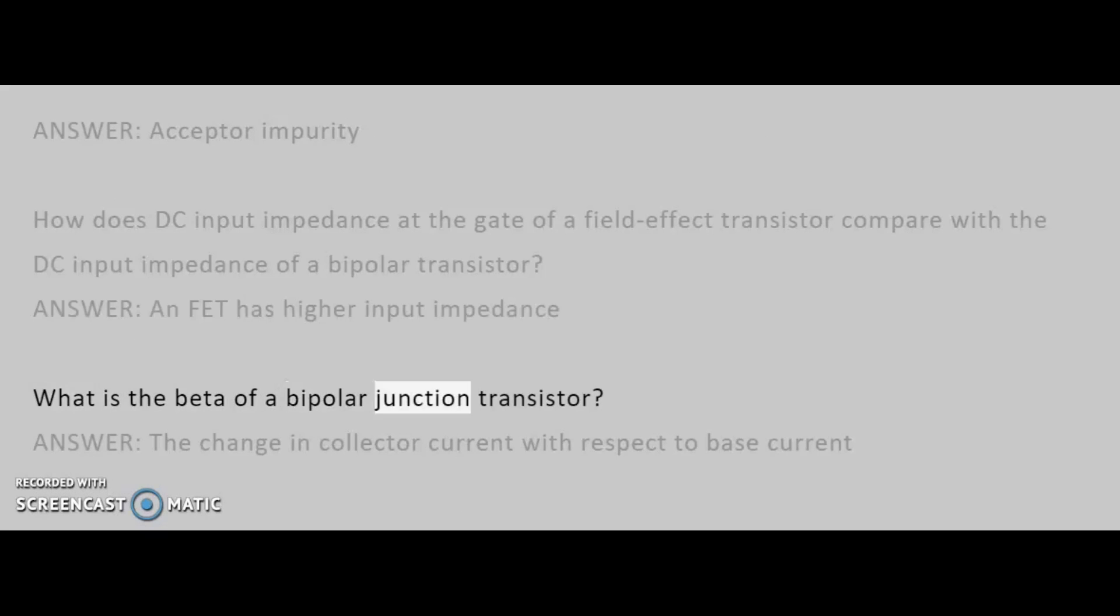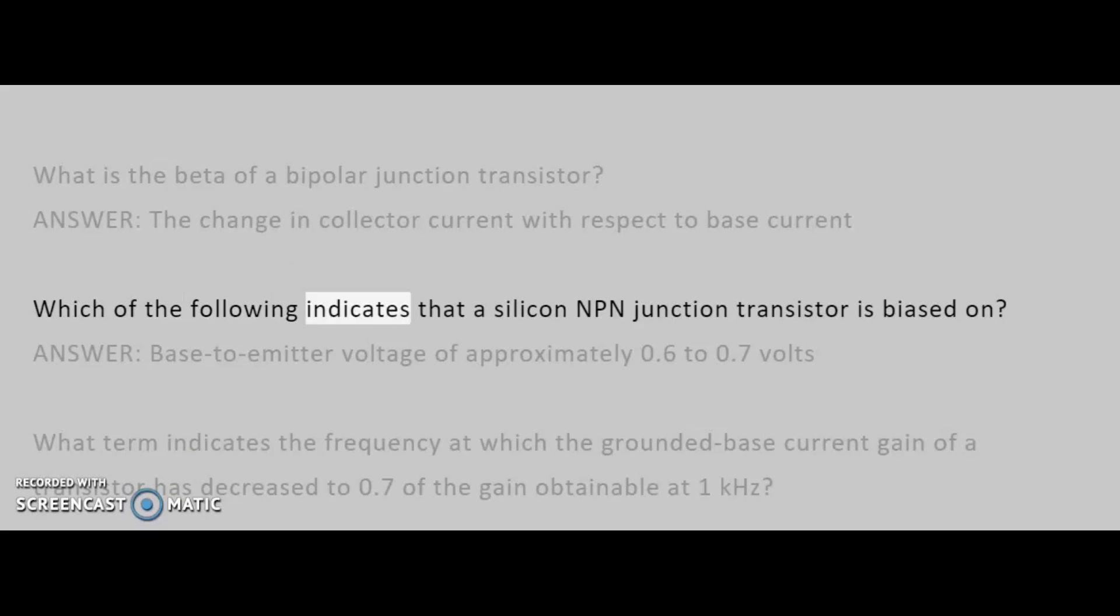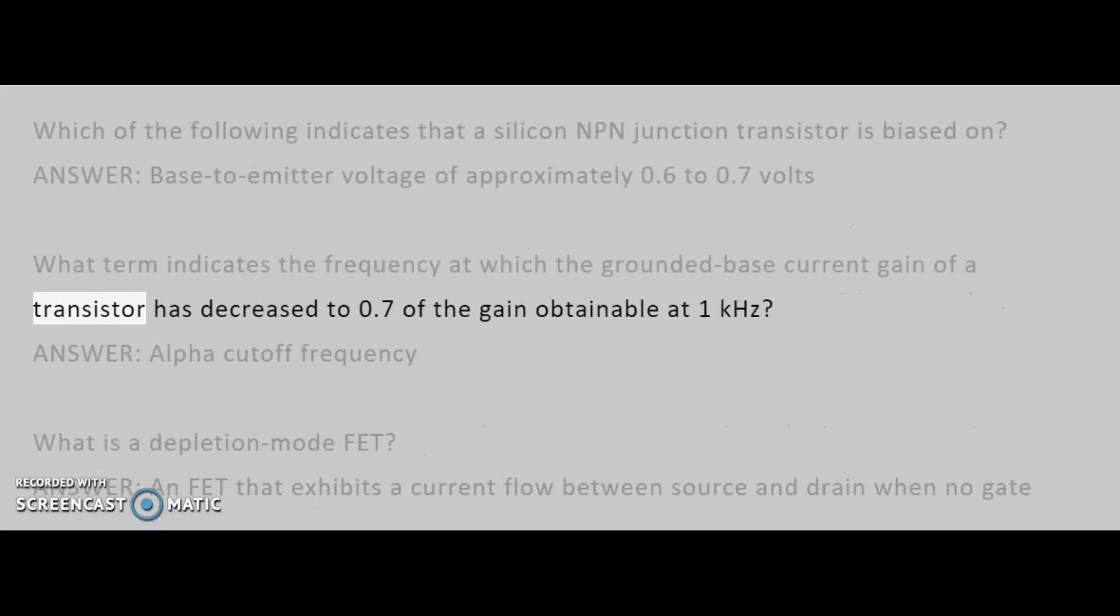What is the beta of a bipolar junction transistor? Answer: the change in collector current with respect to base current. Which of the following indicates that a silicon NPN junction transistor is biased on? Answer: base to emitter voltage of approximately 0.6 to 0.7 volts. What term indicates the frequency at which the grounded base current gain of a transistor has decreased to 0.7 of the gain obtainable at 1 kilohertz? Answer: alpha cutoff frequency.